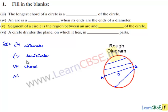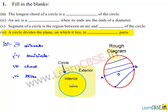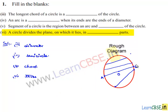Moving on to the sixth bit: a circle divides the plane on which it lies into three parts. If we consider a circle, the points are of three types: one is the interior of the circle, another is the exterior of the circle, and some points lie on the circle itself. Therefore, a circle divides the plane into three parts.